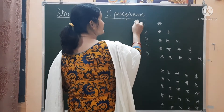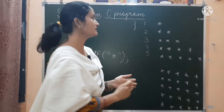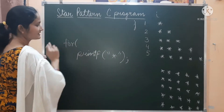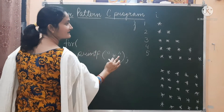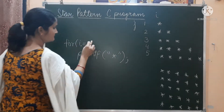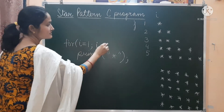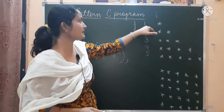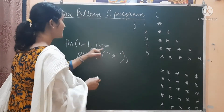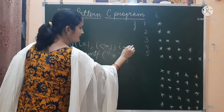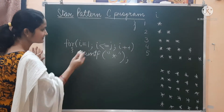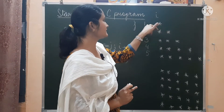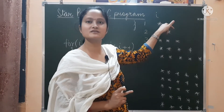Yesterday we used J variable for the outer loop and I variable for the inner loop. The inner for loop prints stars the number of times equal to the value of J. So I should be less than or equals to J, then I plus plus. Yesterday we wrote I is less than 5, but today we wrote I is less than J. Why? Because the value of J equals the number of stars in each line.